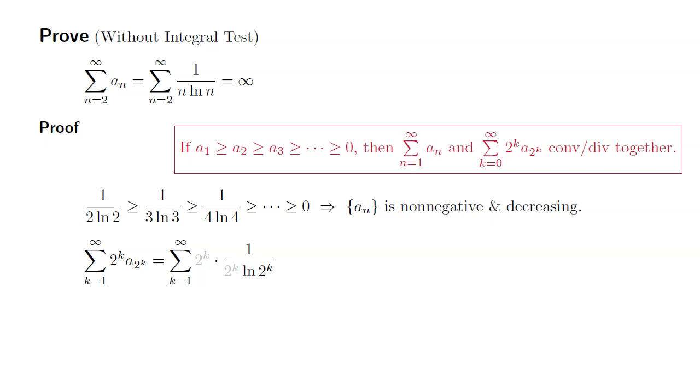And you have a power k, by using one of the log properties, we can place the power k in front of the natural log of 2. So we'll get this.